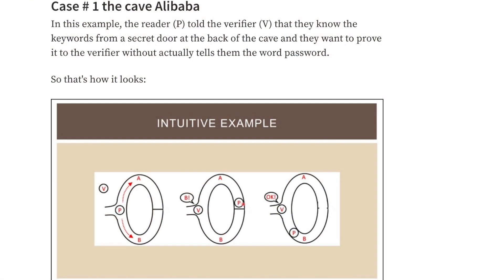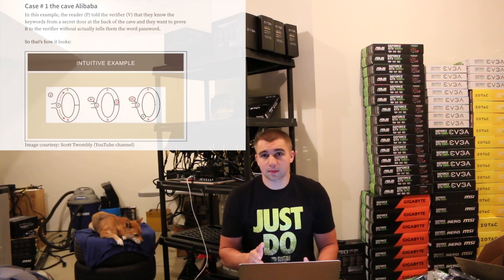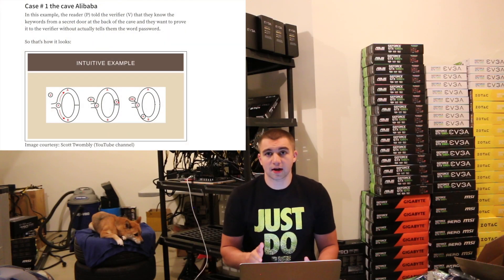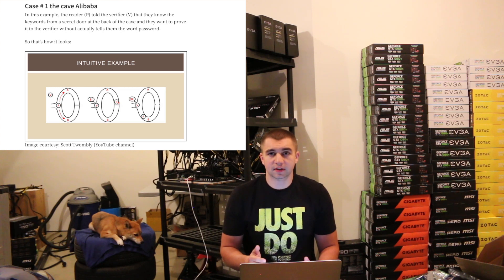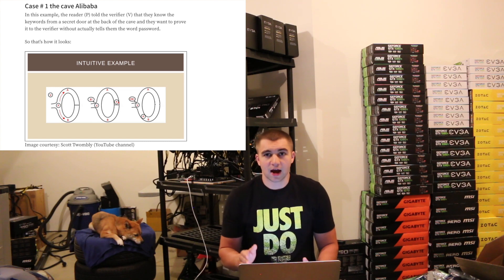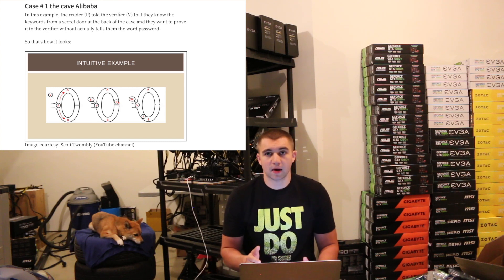My favorite example from all my research is called Alibaba's Cave. In this example, the prover P is saying to the verifier B that they know the password of the secret door at the back of the cave, and they want to prove it without actually telling them the password. The prover can go left or right in the cave 100 or 200 times, make it through every time, and reach the starting point — proving they know the password without revealing it.